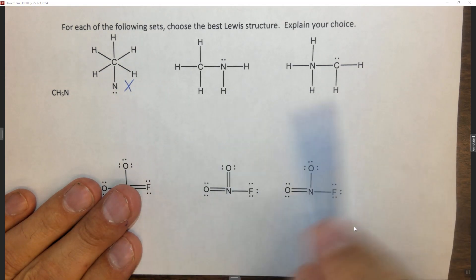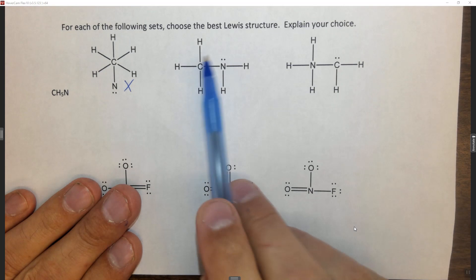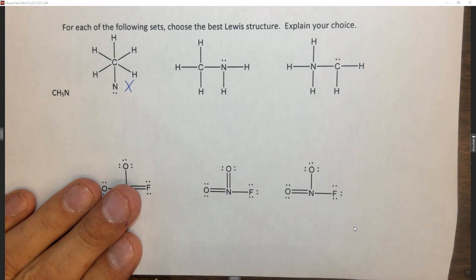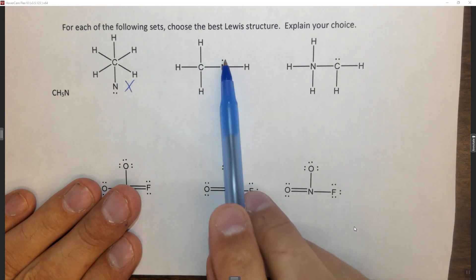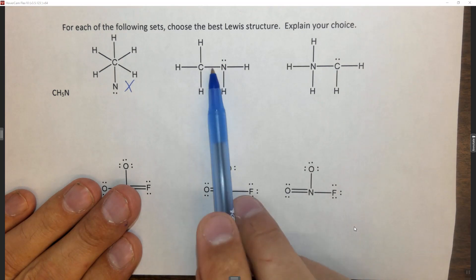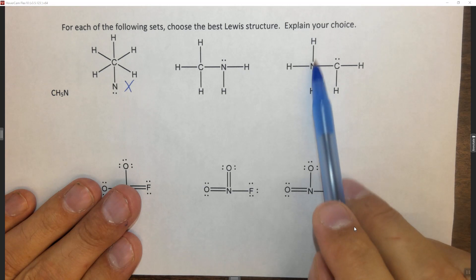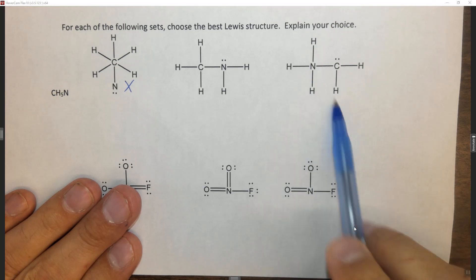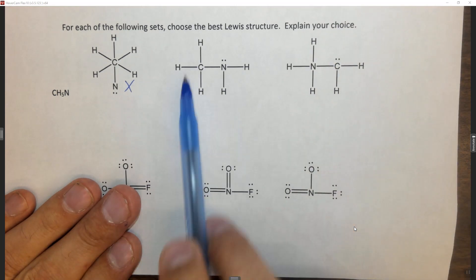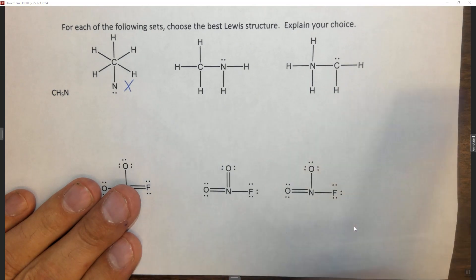Let's look at these two examples. If we look at both of them, the carbon has four domains, so therefore it's got an octet, and the nitrogen has an octet too — two, four, six, eight. If we look at this one, same thing: nitrogen has two, four, six, eight, and carbon has two, four, six, eight. So both the carbons and the nitrogens have octets in these Lewis structures.